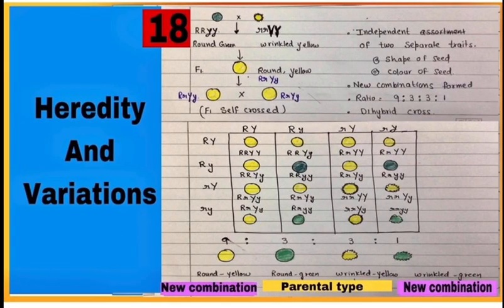This is dihybrid cross done by Mendel. Here, ratio obtained is 9:3:3:1. Also note, along with parental type, new combinations of plants also appear.